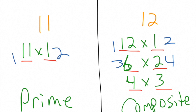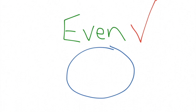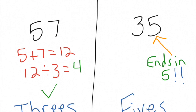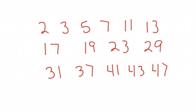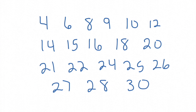Exactly 2 factors means prime; more than that and it's composite all the time. The evens are composite, except the number 2. The 3's and the 5's have a rule too. Prime numbers, composite 2 — count the factors and you know what to do.